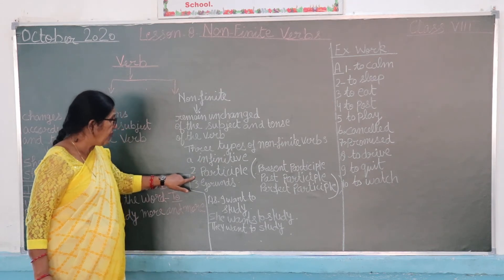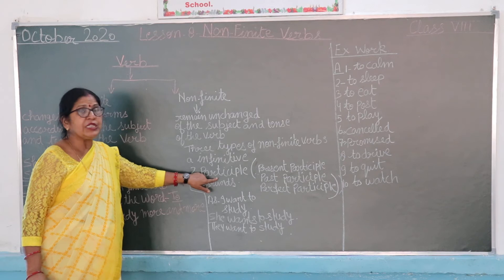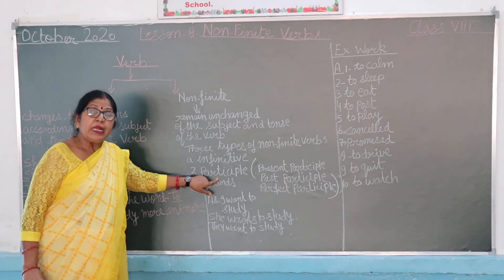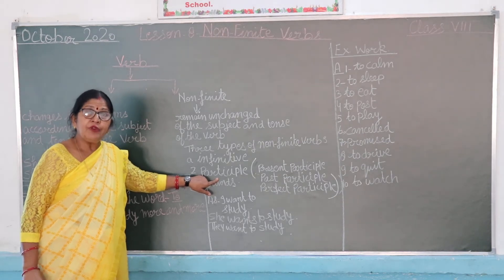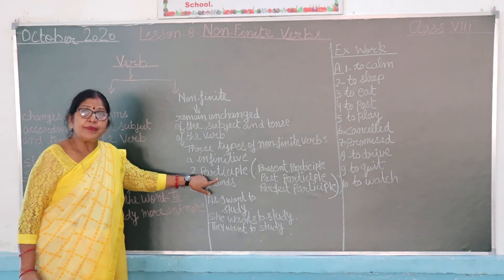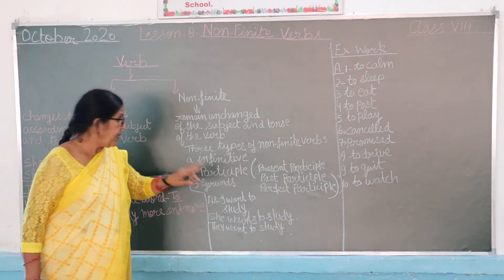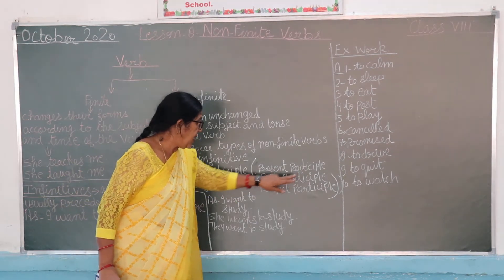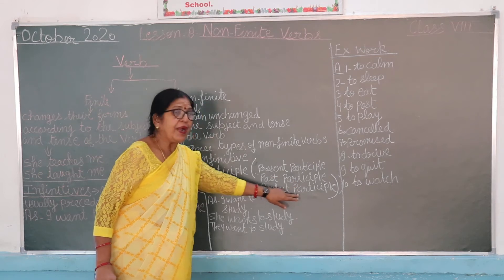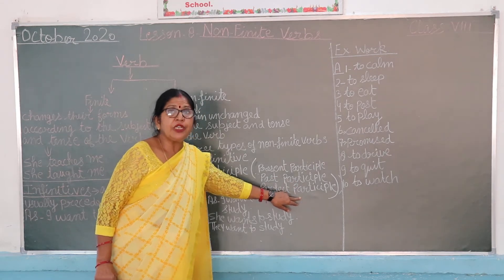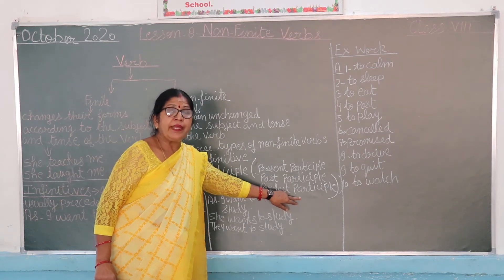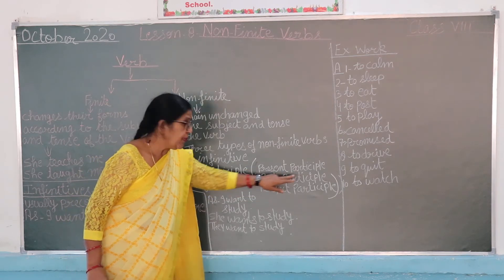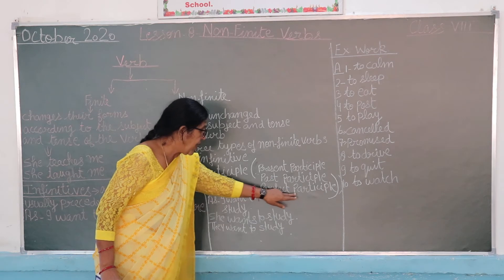The second type of non-finite verb is the Participle. Participle is a totally different and independent topic. In short, there are three types of Participle: Present Participle, Past Participle, and Perfect Participle.